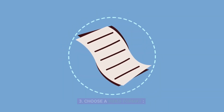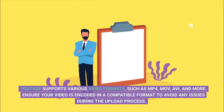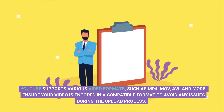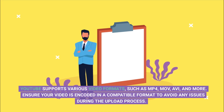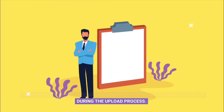Step 3: Choose a video format. YouTube supports various video formats, such as MP4, MOV, AVI, and more. Ensure your video is encoded in a compatible format to avoid any issues during the upload process.